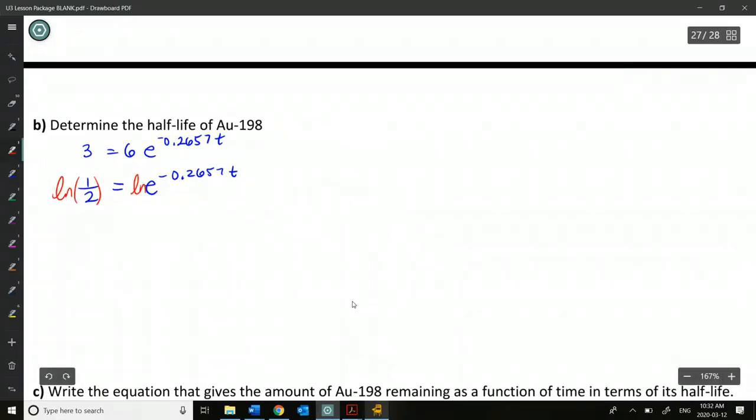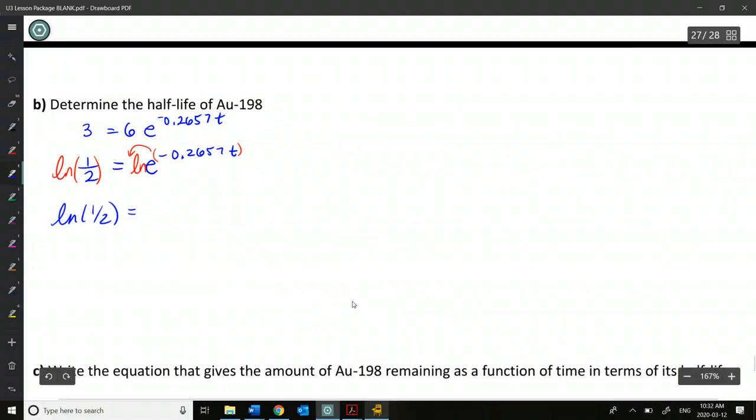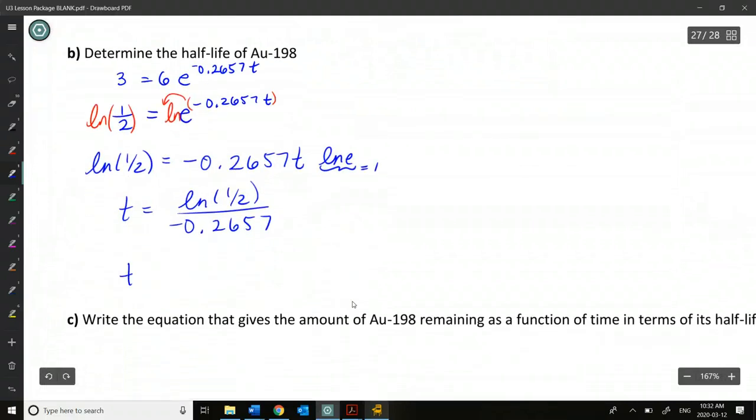So we have half E to the negative 0.26570. So the time that this takes is actually going to give us the half-life period. So how long does the substance take to half? So when we divide out 6 we get half. That should always happen if I'm solving for the half-life. So if you want you can just enter in half right away there. And then we'll solve for the t that makes that happen. So you're going to ln both sides. Bring down your exponent as a multiple.